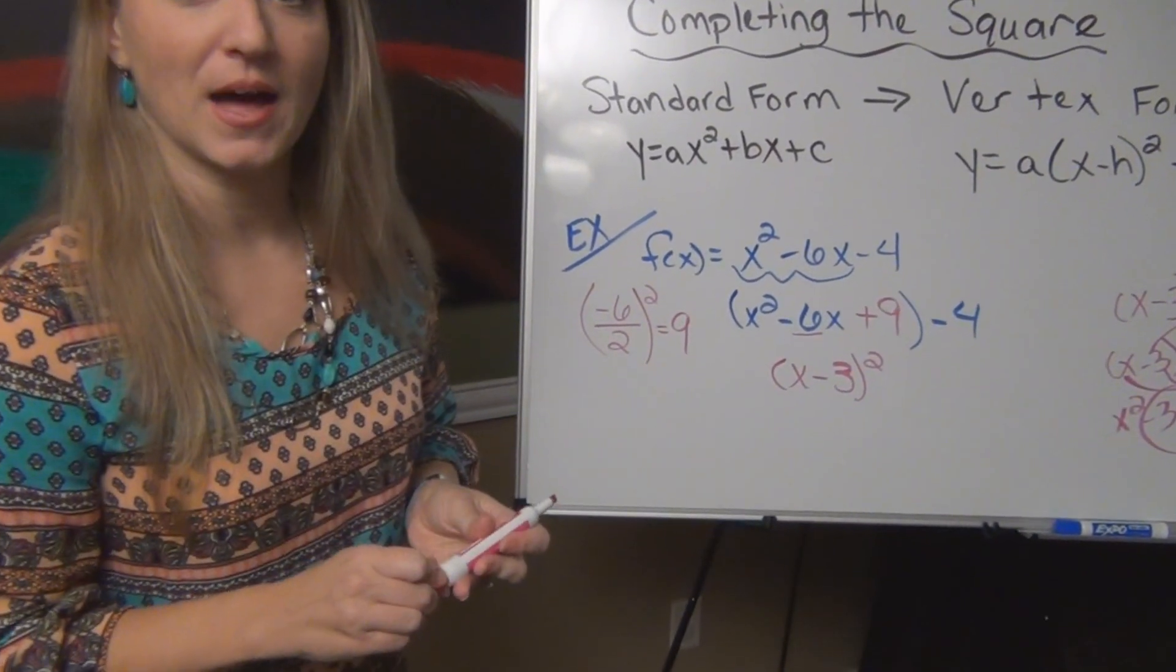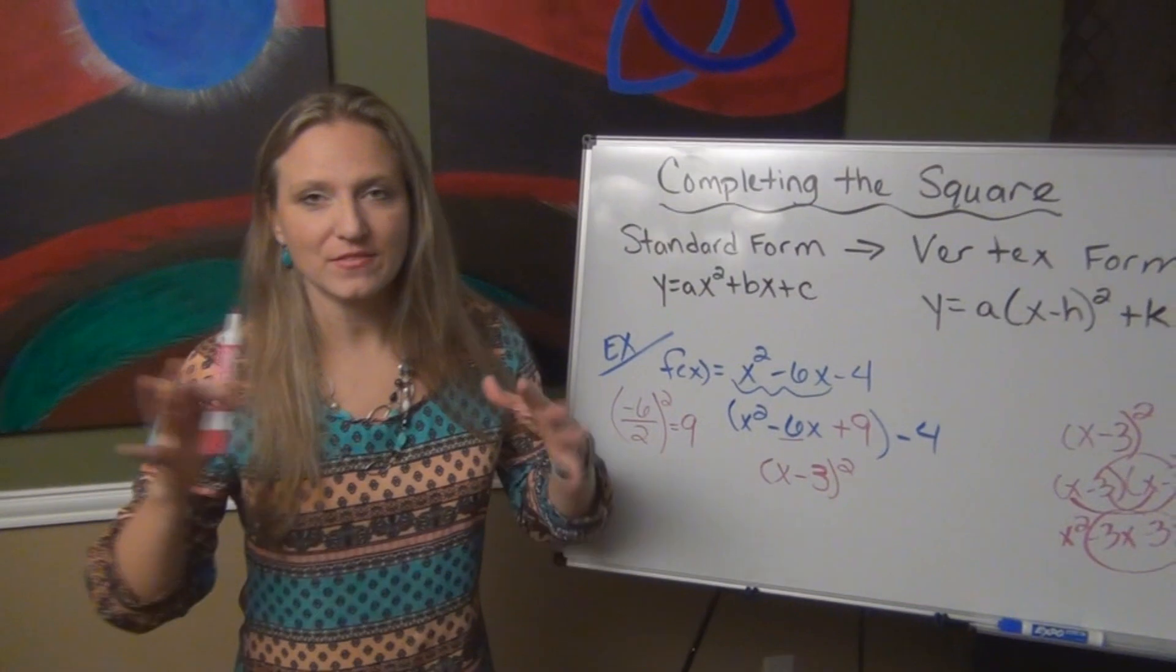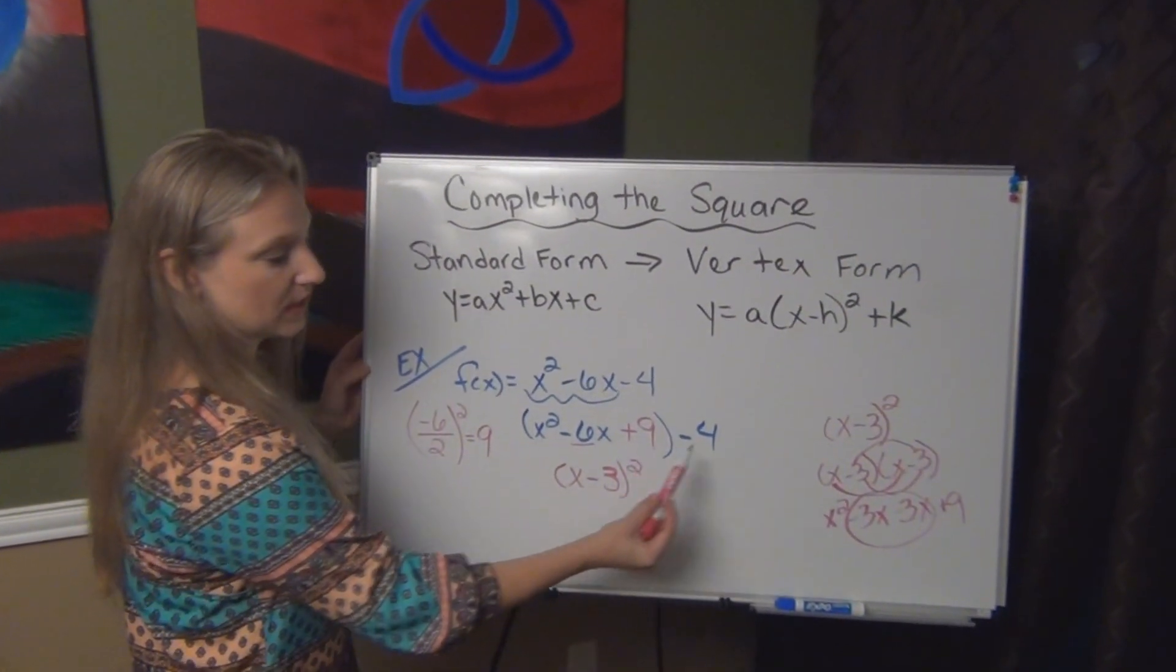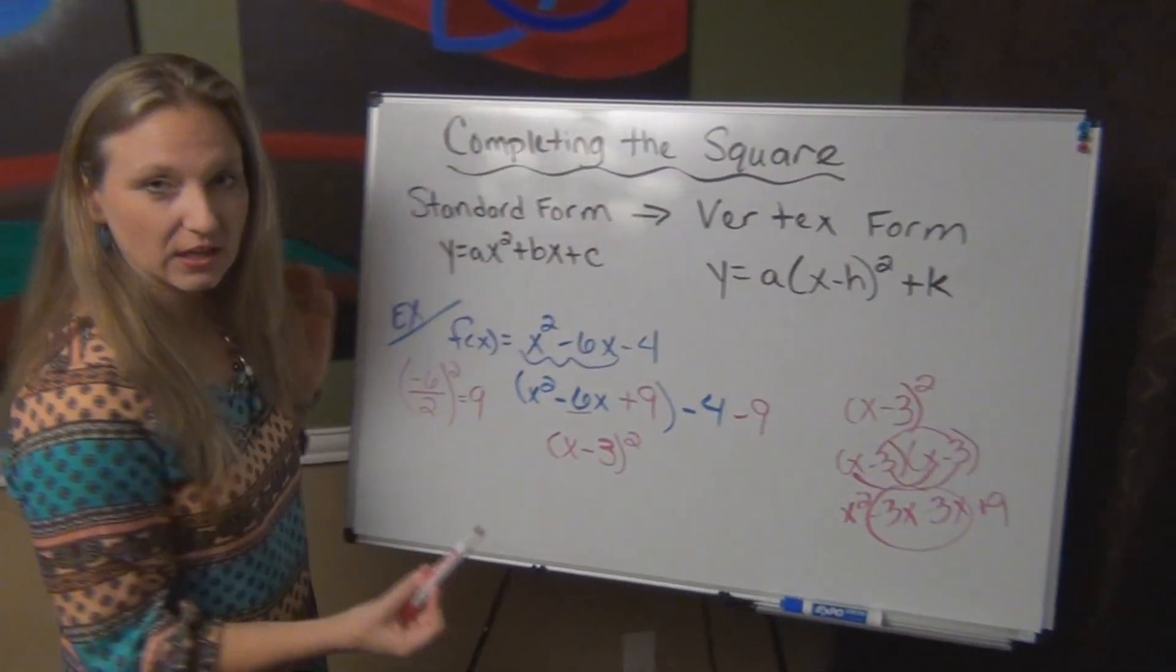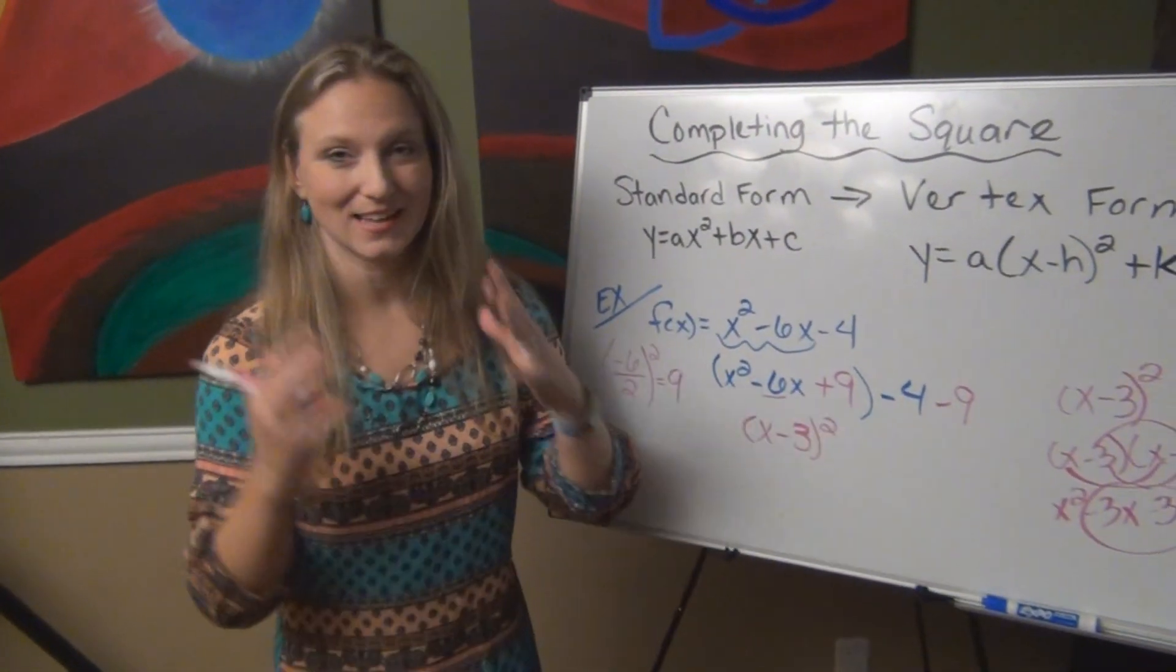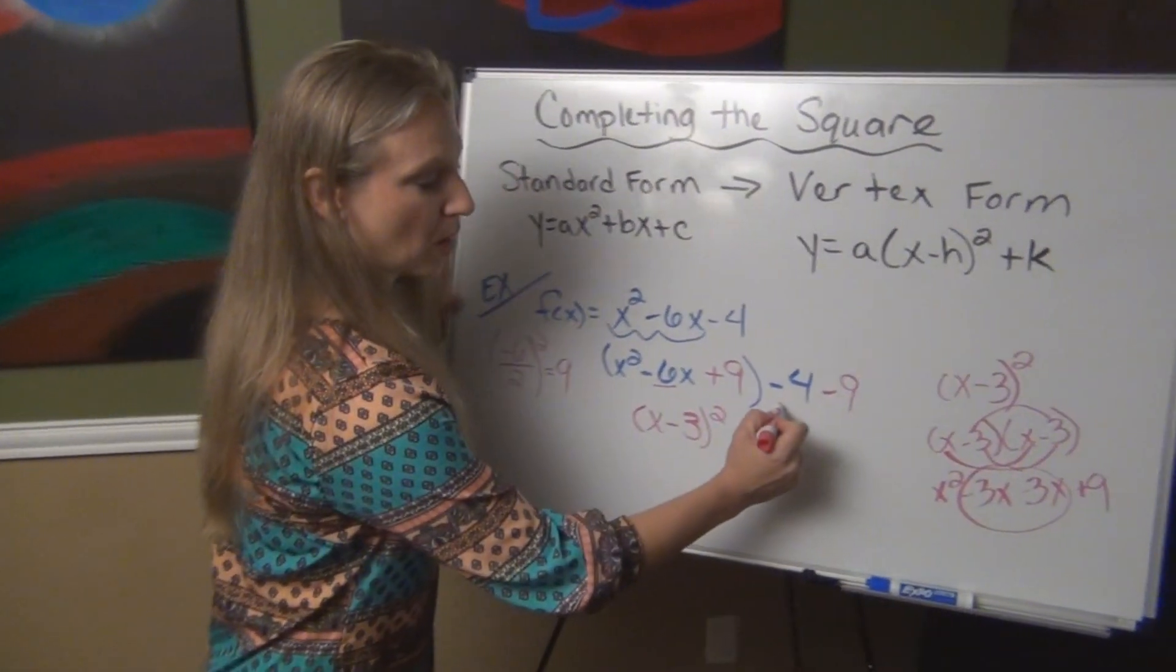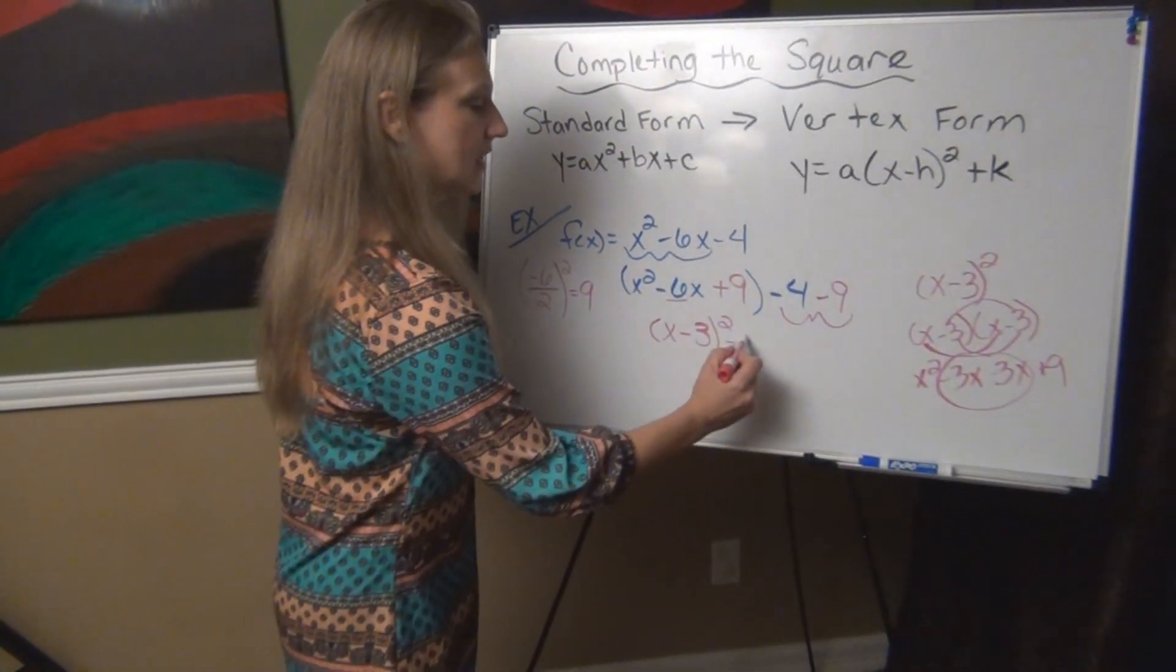Now one thing to keep in mind is you can't just add 9 to a problem. Remember in algebra, we have to keep our equation balanced. So since we added 9 to our equation here, we are going to have to subtract 9 over here because really plus 9 minus 9 is 0. I'm keeping the equation balanced. So to finish my problem off, I'm going to combine my two constants here at the end to get negative 13.